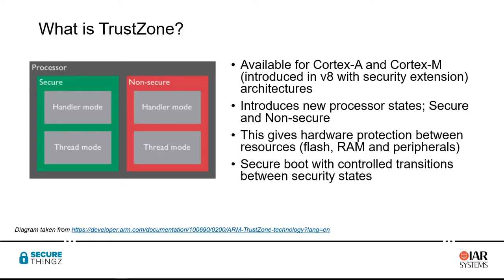ARM's TrustZone architecture adds a new level of protection over the existing modes in which the Cortex-M core can already operate. Once TrustZone is enabled, it provides a mechanism for running in either secure or non-secure modes. When the processor is running in secure mode, it has access to all resources on the part, including the ability to set up the model for what memory spaces and IO resources will be available to any code running in non-secure mode.